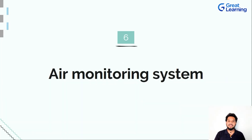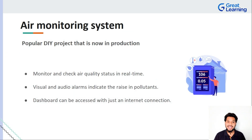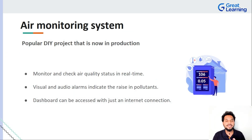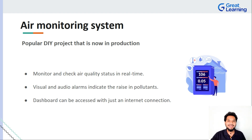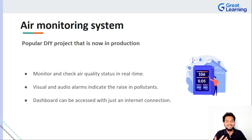The first top idea is an air monitoring system. An air monitoring system does not require a lot of explanation. You will have to put out certain metrics such as air quality index, details regarding humidity, and pollution detection. There are so many things you can do here.